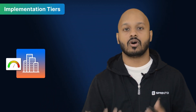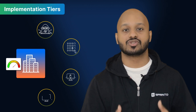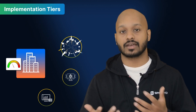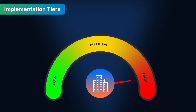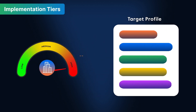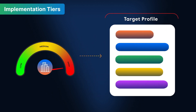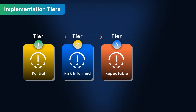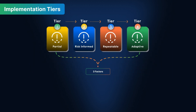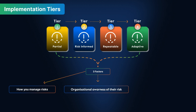In simple words, Implementation Tiers describe how your organization wants to prepare to manage the risks that it perceives. If you feel your organization operates in a high-risk environment, you'll want to be extra careful with your data and choose a target profile that reflects that. There are four implementation tiers in NIST CSF: Partial, Risk-Informed, Repeatable, and Adaptive. Three factors determine which tier you fall under: one, how you manage your risks; two, organizational awareness of your risk; and three, external awareness of said risk.